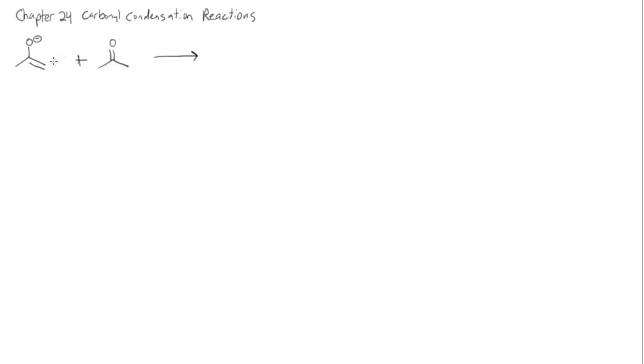We form an enolate by deprotonating alpha to a carbonyl. In the last chapter we would have the electron pair come back down to reform the carbonyl and this electron pair would come out and react either with a halogen or with an alkyl halide.